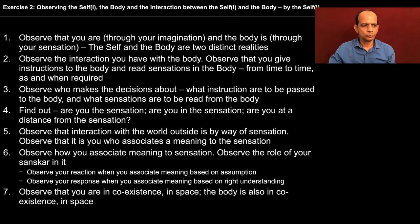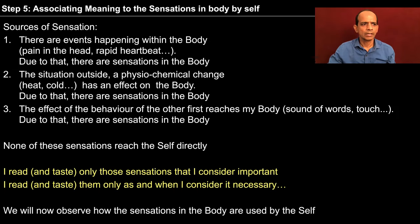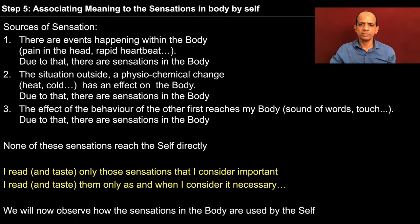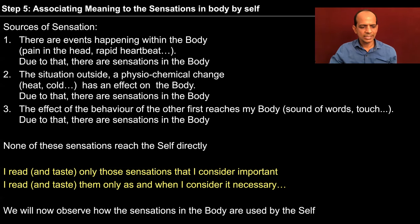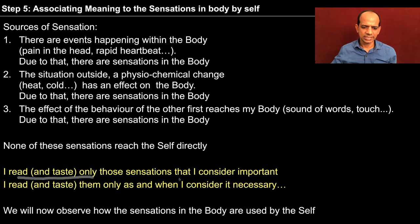These are the seven steps that we are trying to go through. In the previous session we saw that there are three sources of sensation: one, the events happening within the body; two, the situation outside — some physiochemical change outside the body which has an effect on the body; and third, the effect of the behavior of a person which again has an effect on the body. We could see that the self reads and tastes only those sensations that the self considers important, only as and when required.